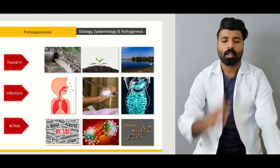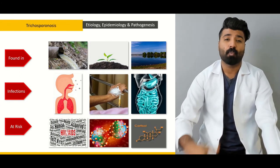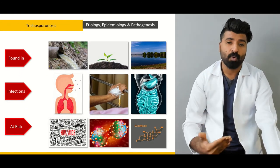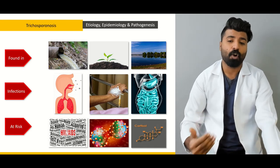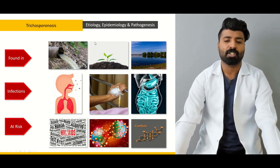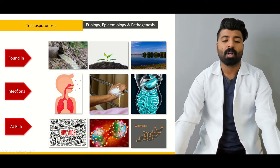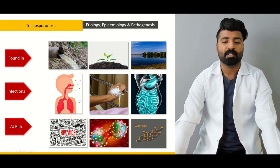Next, we're going to talk about trichosporonosis — where it is found and where this pathogen comes from. We're going to talk about water contamination, soil contamination, and plant contamination, and then how it can infect — whether through the pulmonary system, IV system, or gastrointestinal system.